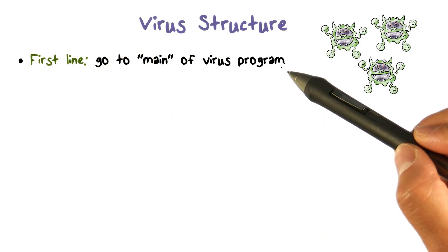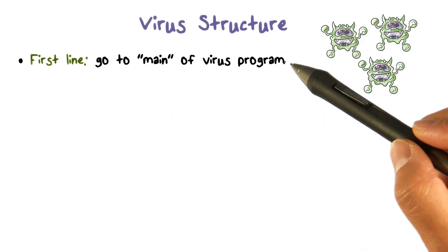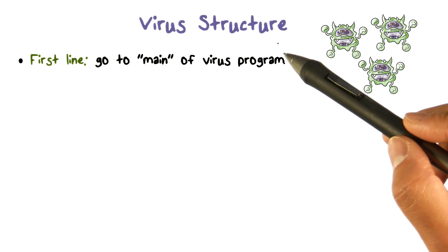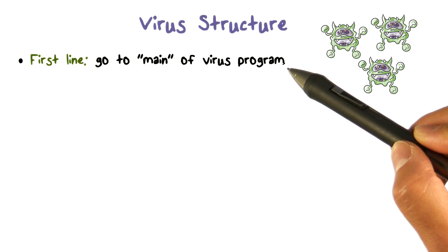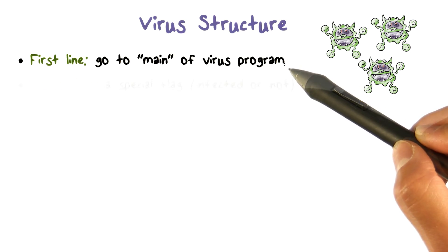If you look at the infected program, the first line controls that the virus program will always run first. It is critically important to put this control in the first line of the infected program, because this is the only way to guarantee that the virus code will always be run whenever the program executes.